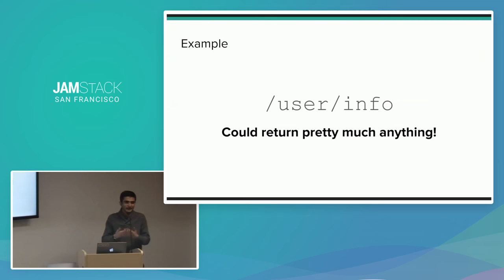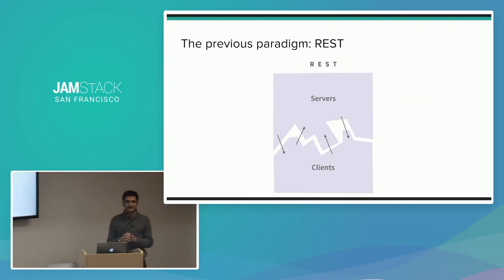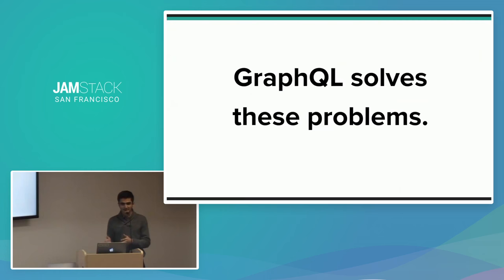Even though I know when I'm writing my front-end code that this probably returns the user's name and username, the client doesn't have any idea what it will actually return until it does return it. So you have a back-end architecture of a bunch of servers interacting with clients through these endpoints, and this leads to a kind of jagged and weird boundary between your clients and servers.